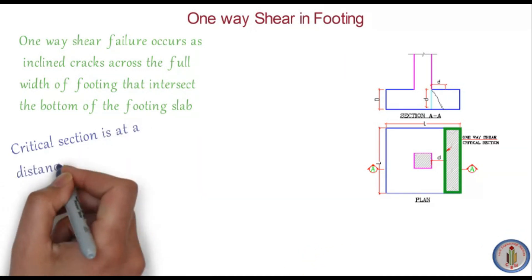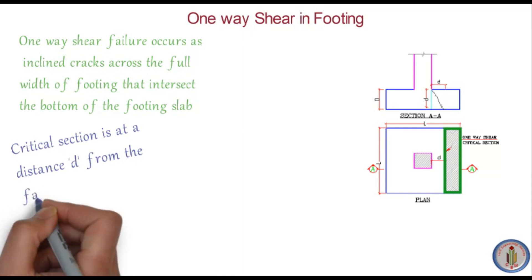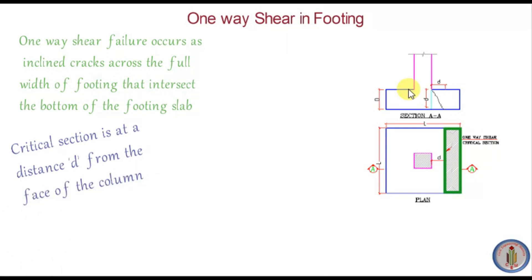The critical section is at a distance d from the face of the column. When the load is applied on the footing, it gets dispersed at an inclined angle of 45 degrees on both sides, forming an isosceles triangle. So if the depth is d, then the horizontal distance from the face of the column to the critical section is also d. That is the reason we consider the critical section at a distance d from the face of the column.